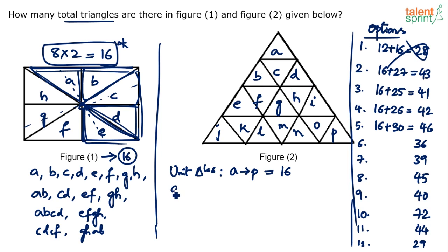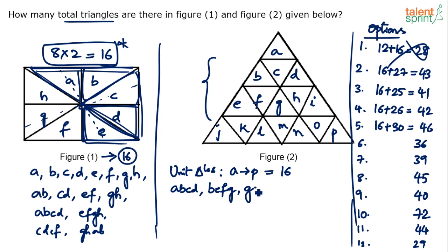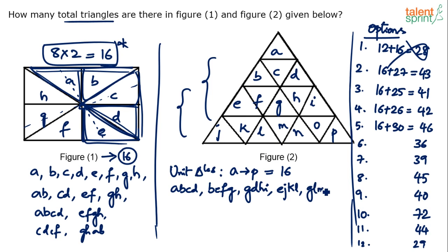Counting four-unit triangles from top to bottom: rows 1+2 give A,B,C,D and B,E,F,G and D,G,H,I — that's two. Rows 3+4 give E,J,K,L and G,L,M,N and I,N,O,P — that's three more. So far we have six four-unit triangles.